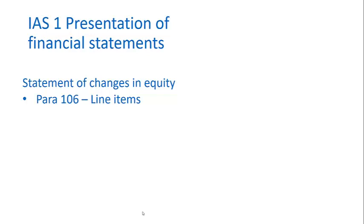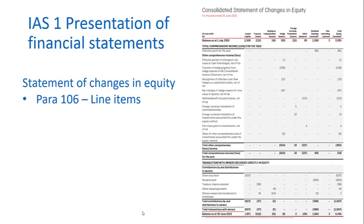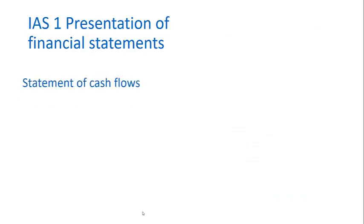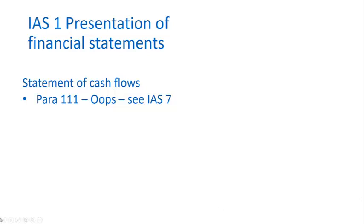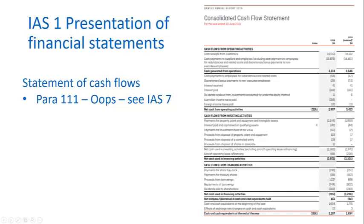Firms are also required to disclose a statement of changes in equity. Paragraph 106 describes the line items that must be recognised. The statement of cash flows is not addressed in AASB 101 — it's actually addressed in AASB 7. There is a requirement to present a statement of cash flows, referenced in paragraph 111, but the details are provided in AASB 7, which I'd encourage you to look at for how it outlines what's presented and how it's presented.